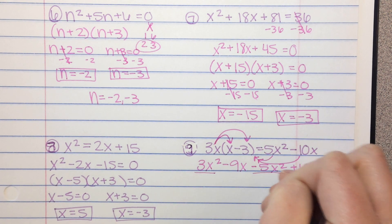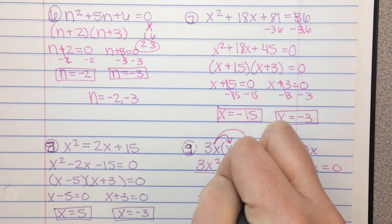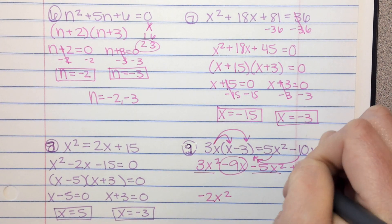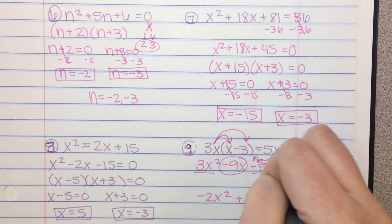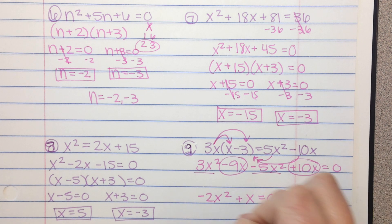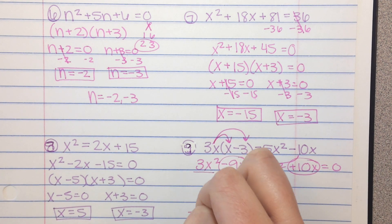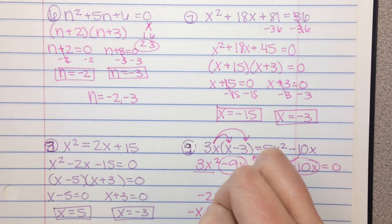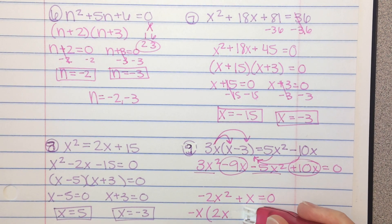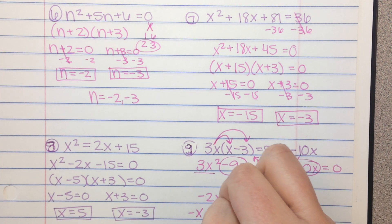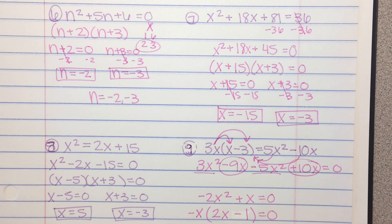I have 3x squared minus 5x squared is negative 2x squared. And I have negative 9x plus 10x is just an x. I can factor out a GCF of negative x, and that leaves me with 2x minus 1. That equals 0.